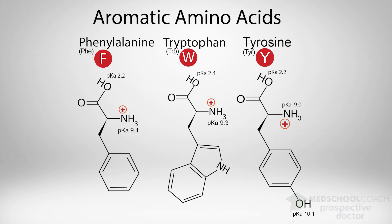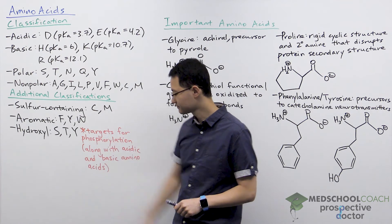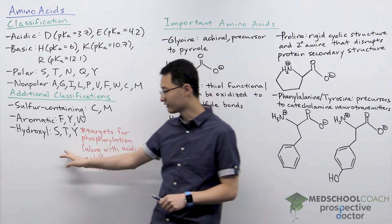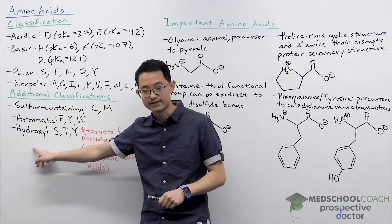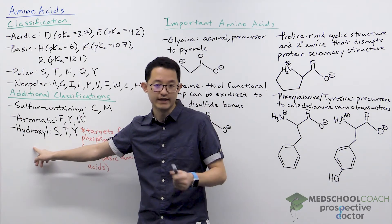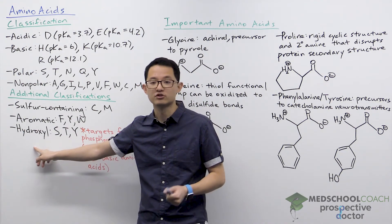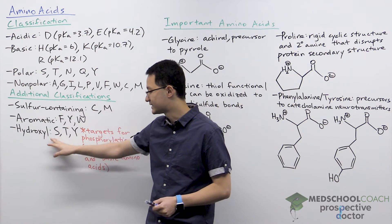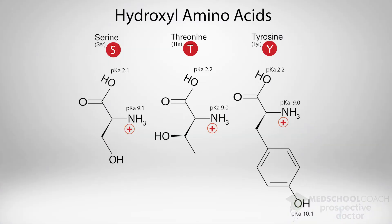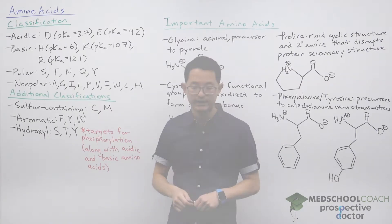The aromatic amino acids include phenylalanine, tyrosine, and tryptophan, as you can see in this diagram. Finally, we can classify amino acids that have a hydroxyl group — these include serine, threonine, and tyrosine. You can see in this diagram that they all have this OH functional group.